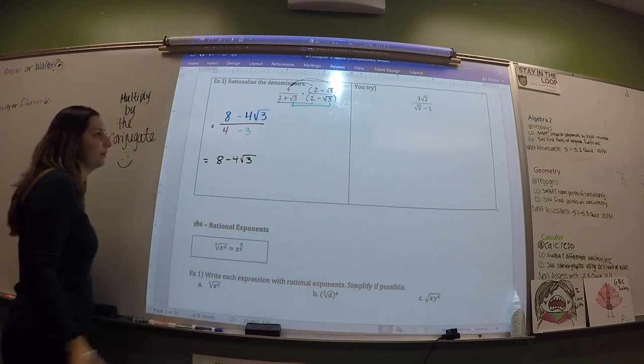You multiply by 2 minus root 3 over 2 minus root 3 — essentially multiplying by 1. On the top, distribute the 4: you get 8 minus 4 root 3. On the denominator, since they're conjugates, just do first and last: 2 times 2 is 4, and root 3 times negative root 3 is negative 3. So 4 minus 3 equals 1.